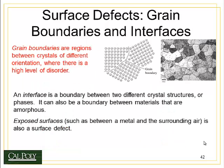Another type of defect we'll encounter are grain boundaries and interfaces. Grain boundaries are regions between crystals of different orientation, where there is a high level of disorder at the interface. We looked at a picture of actual grains and their grain boundaries surrounding the grains. The grain boundary isn't really a thing — it's just a defect or a mistake in the crystal as far as any one grain is concerned.